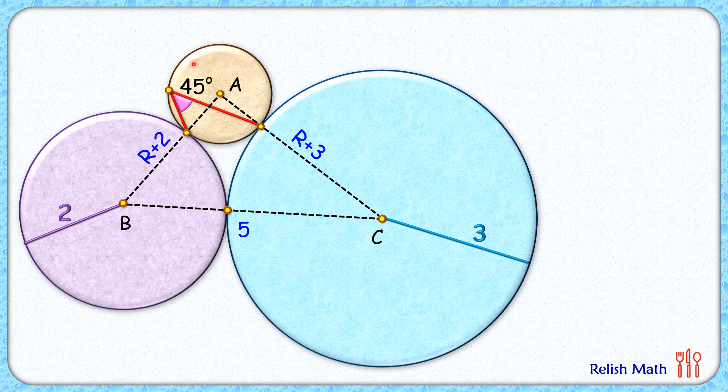Now if we look at the brown circle, the angle subtended at the circumference from these two points is 45 degrees. By the inscribed angle theorem, the angle subtended by the same chord at the center will be twice that. So angle A will be 90 degrees, and thus triangle ABC is a right-angle triangle.